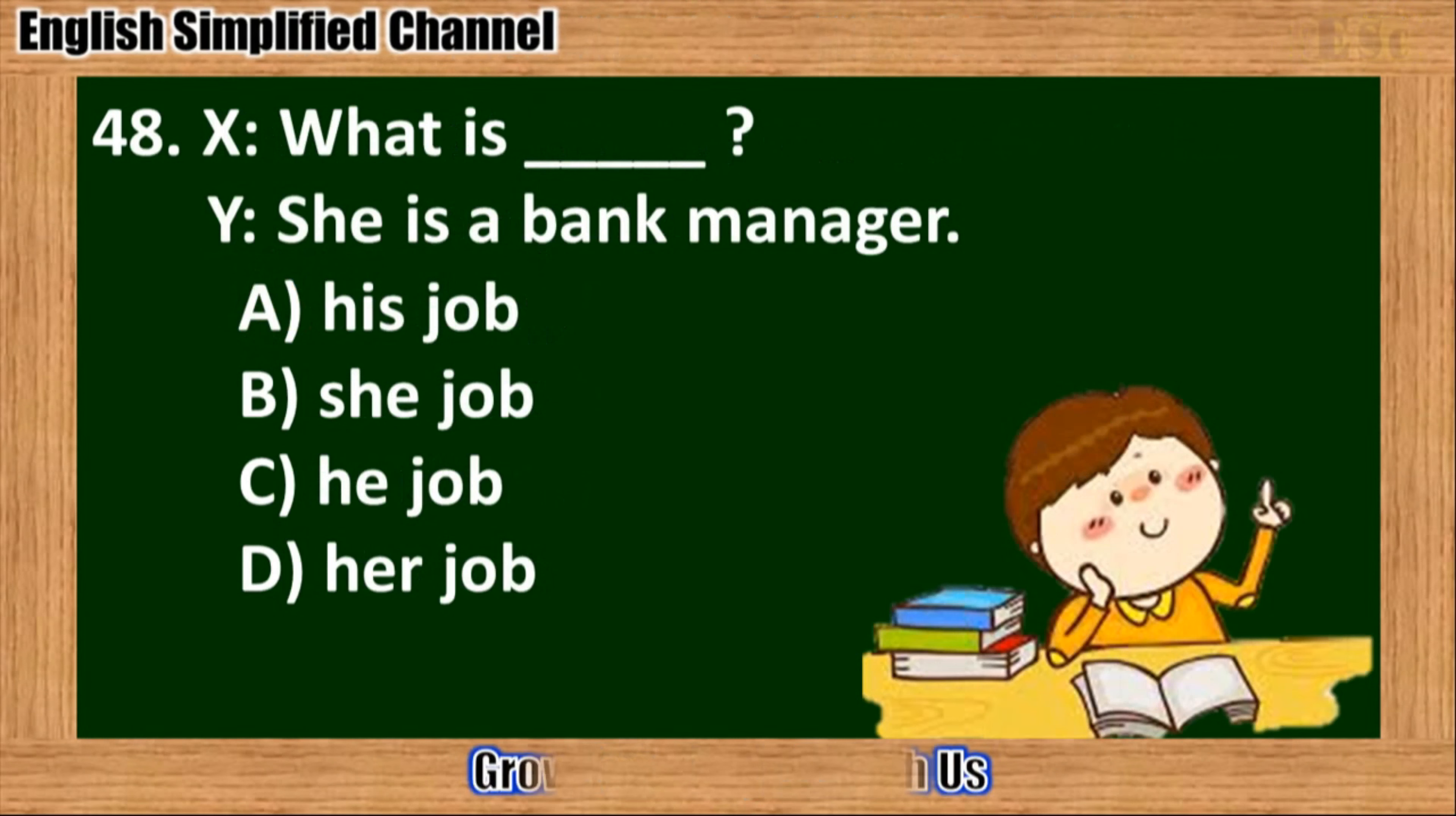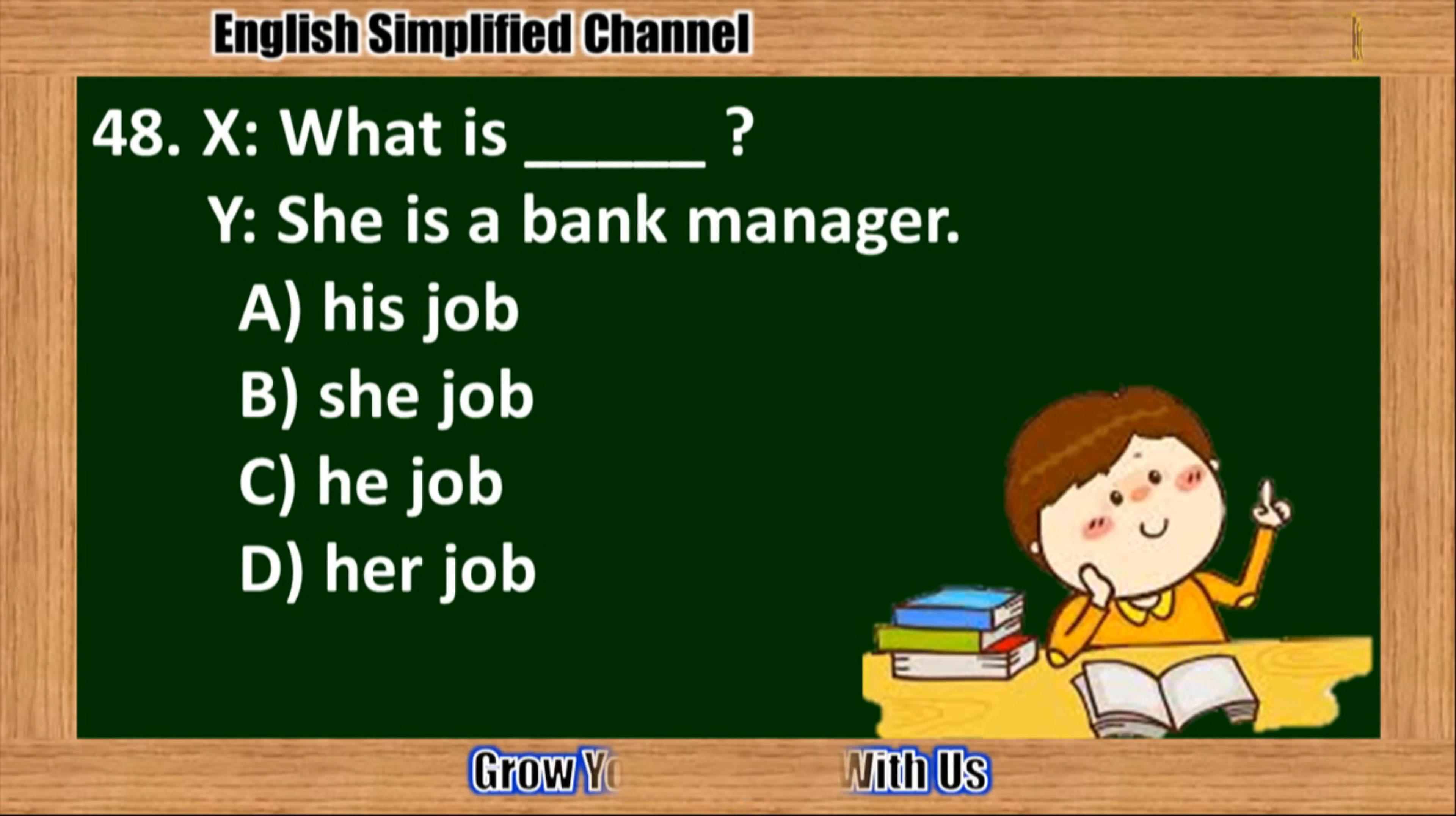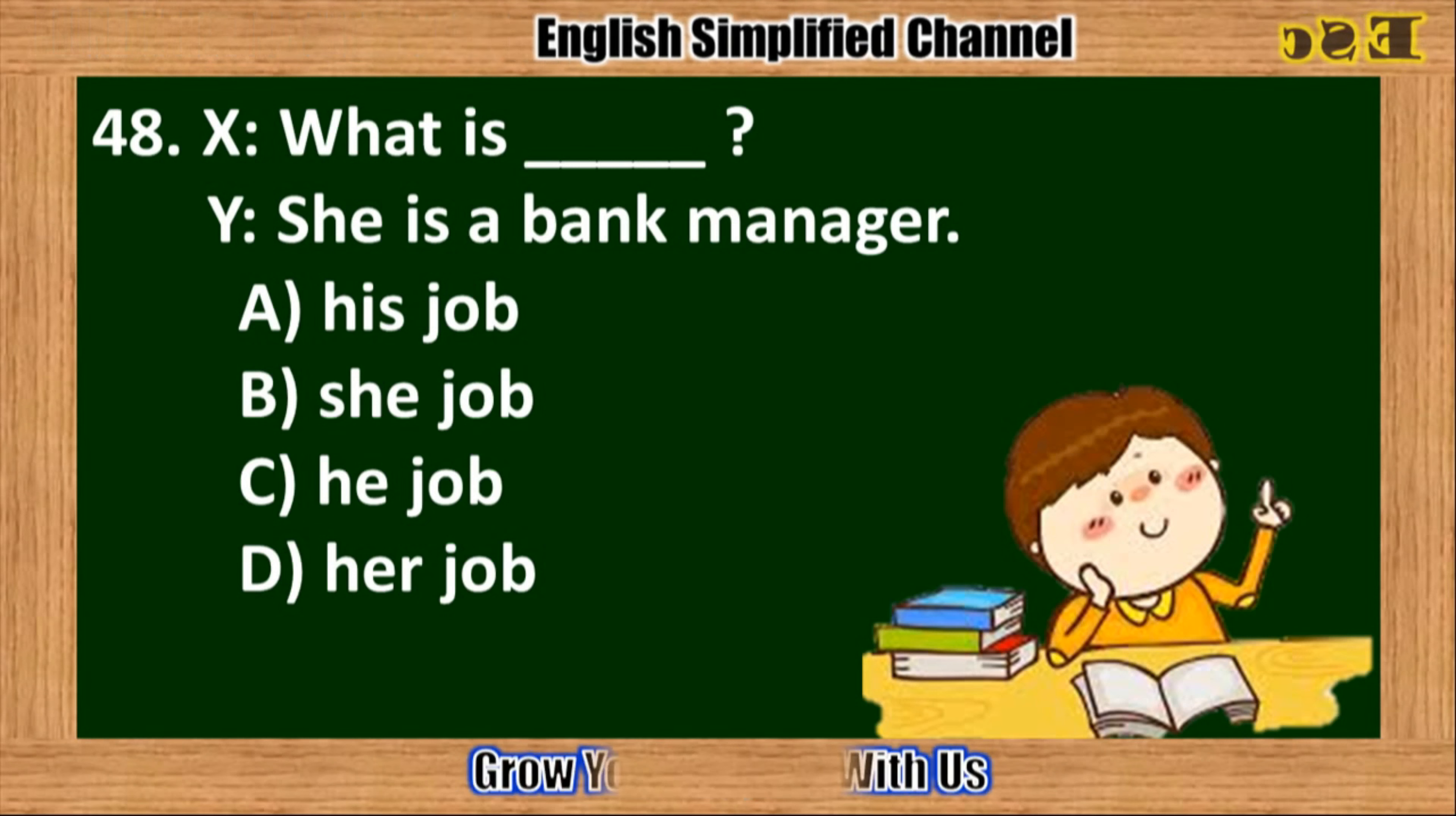48. What is blank? She is a bank manager. A. His job. B. She job. C. He job. D. Her job.